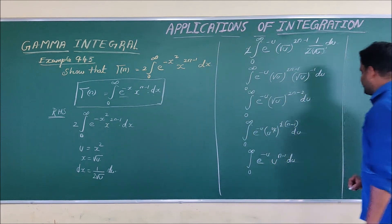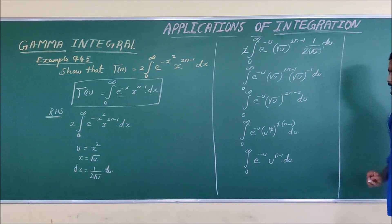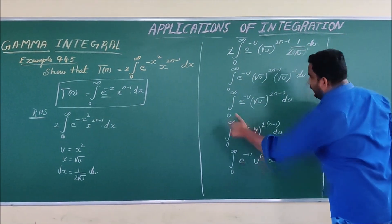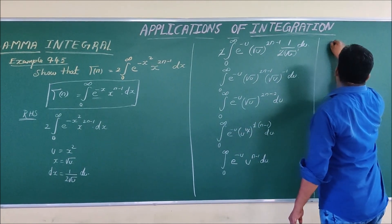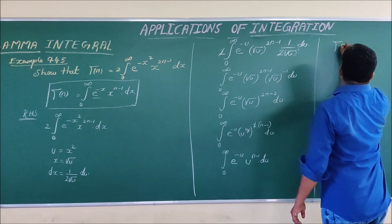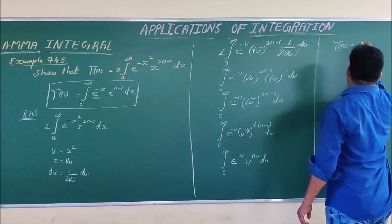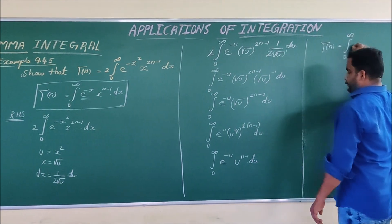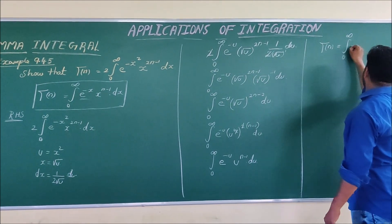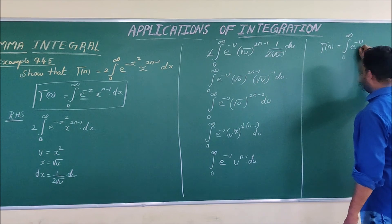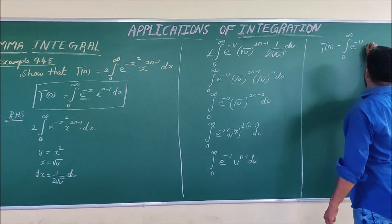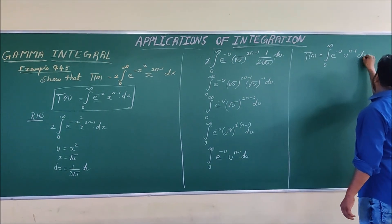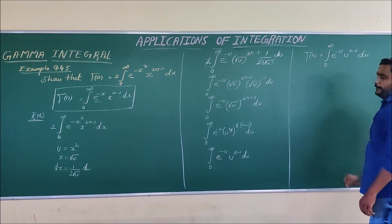As shown, it has been proved that the entire term is equal to gamma of n. So gamma of n equals the integral from 0 to infinity of e to the power of minus u, times u to the power of n minus 1, du. Hence proved.